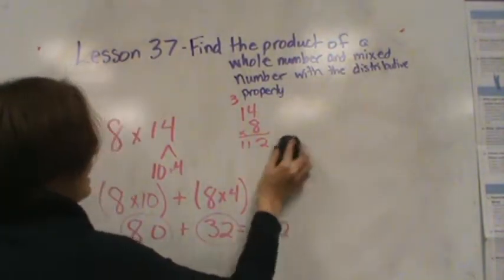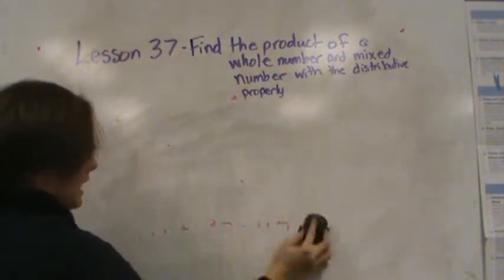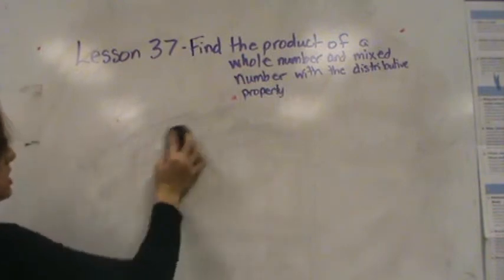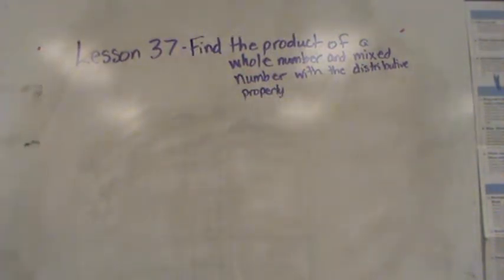Now we're going to talk about how it works with mixed numbers. Mixed numbers is really kind of similar to whole numbers. You have two parts. Just like you had tens and ones, you're going to have ones and fifths or ones and fourths or ones and thirds. You're just going to break that up. So let's get started with our first one.